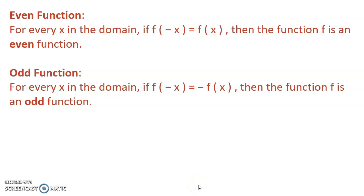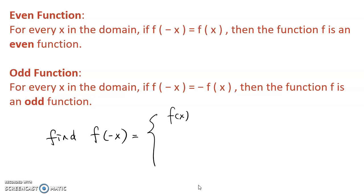To determine if a function is even or odd, we just have to find the value of f of negative x. If it is equal to f of x, then it's an even function. If it is equal to negative f of x, then it's an odd function. If it's neither, then it's neither of the two.